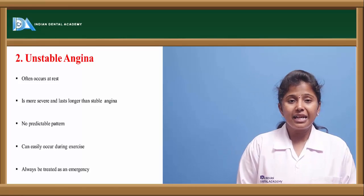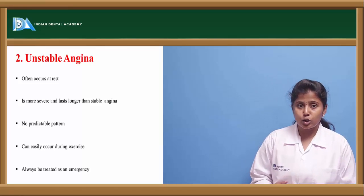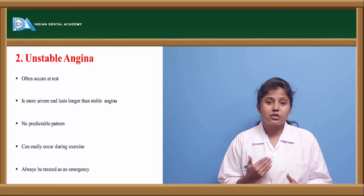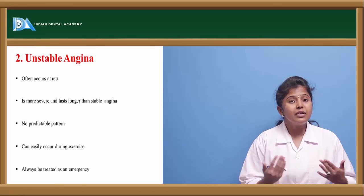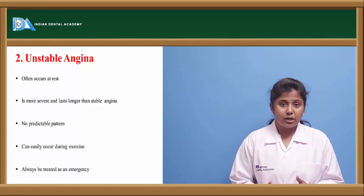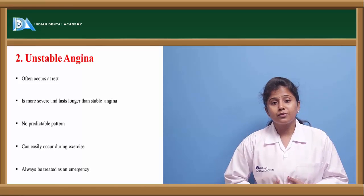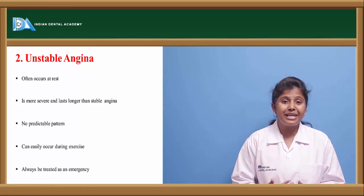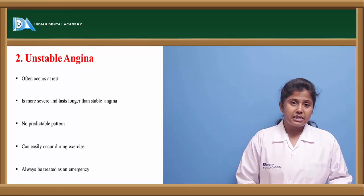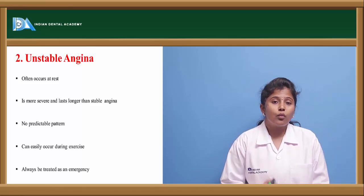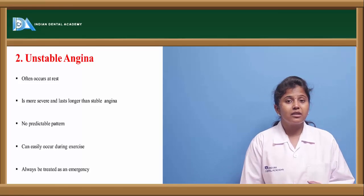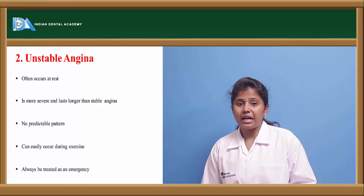Unstable angina occurs even when a person is at rest. It is more severe and lasts longer than stable angina. It can occur due to various cardiovascular disorders, the pain pattern is not predictable, and it can also be triggered by exercise, as excessive exercise increases oxygen consumption and decreases supply to the heart. This type needs to be immediately treated.